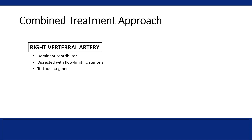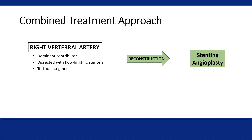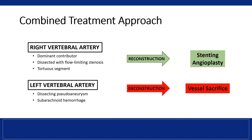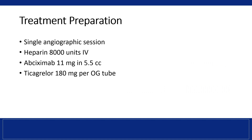To address the ischemic impact of the critical flow-limiting stenosis in the right vertebral artery, a reconstructive approach with stenting and angioplasty was pursued. Following right vertebral artery reconstruction, the ruptured dissecting pseudoaneurysm of the left V4 segment was tackled with a deconstructive approach. In preparation for treatment, the patient was anticoagulated with heparin and given both abciximab and ticagrelor. Treatment occurred during the same initial diagnostic angiography session.